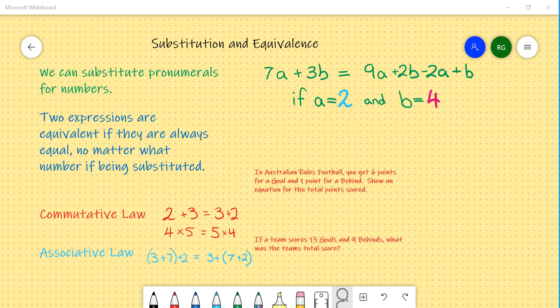But if we have two expressions, they are equivalent if they're always equal. So if two expressions are equivalent, it means that they are equal, no matter what number is being substituted. It is also important to remind yourself of the commutative law and the associative law. And there are examples down below.